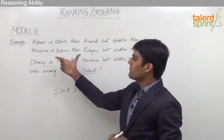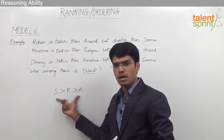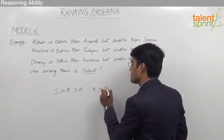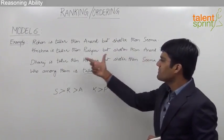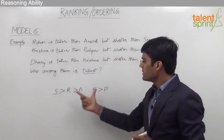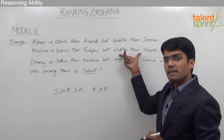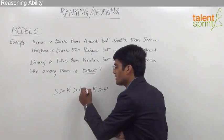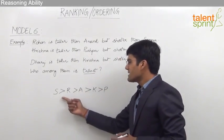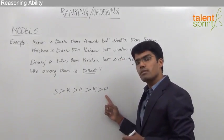Moving on to the second statement: Krishna is taller than Pushpa but shorter than Anand. We neither have Krishna nor Pushpa in our equation yet. Krishna being shorter than Anand means Anand is taller than Krishna. Integrating this, the statement becomes: Sima is taller than Rohan, Rohan is taller than Anand, Anand is taller than Krishna, and Krishna is taller than Pushpa.